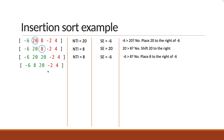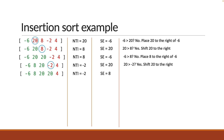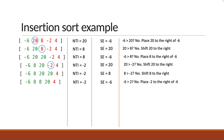The next unsorted element is minus 2. Compare it with the sorted part and shift the sorted elements as necessary. Is 20 greater than minus 2? Yes, so shift to the right. Is 8 greater than minus 2? Yes, so shift to the right. Is minus 6 greater than minus 2? No, so place minus 2 to the right of minus 6. Our sorted part is now minus 6, minus 2, 8 and 20.